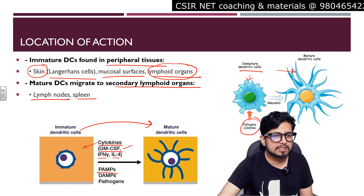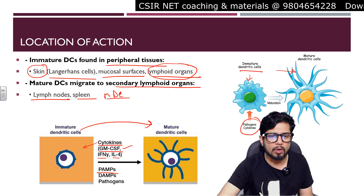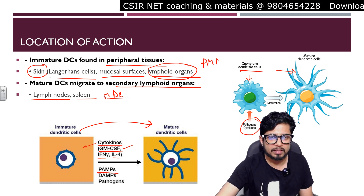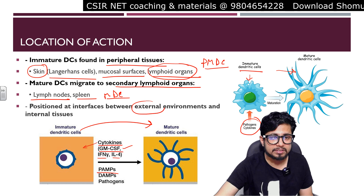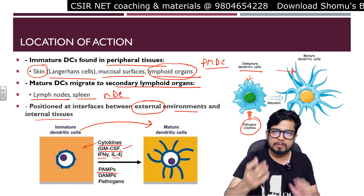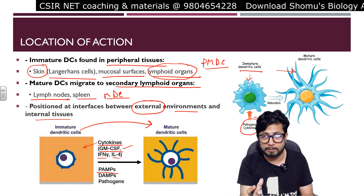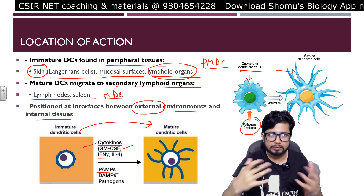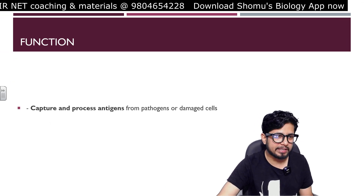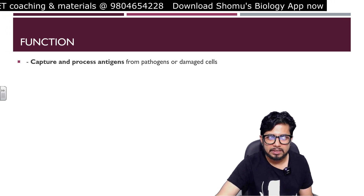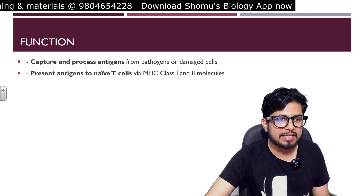Mature dendritic cells migrate to secondary lymphoid organs like lymph nodes and spleens. Immature dendritic cells are found in skin, mucosal membranes, and lymphoid organs — positioned at the interfaces between the external environment and internal tissues, since skin and mucous membranes are barriers between those environments.